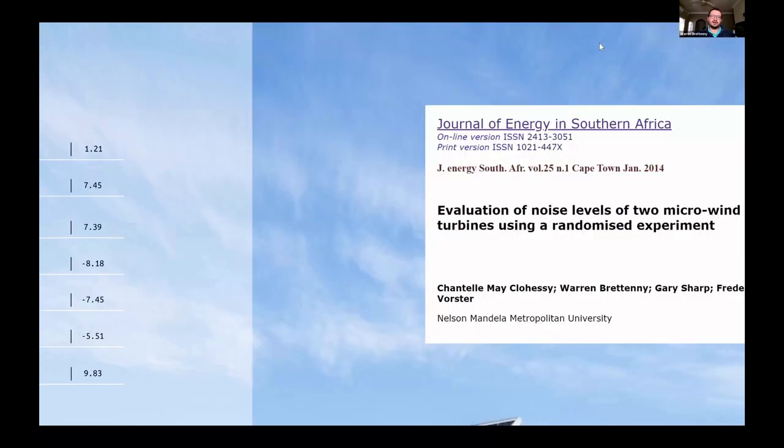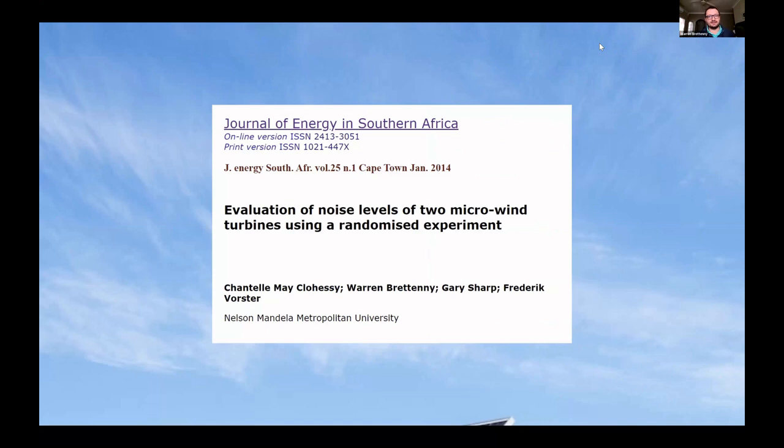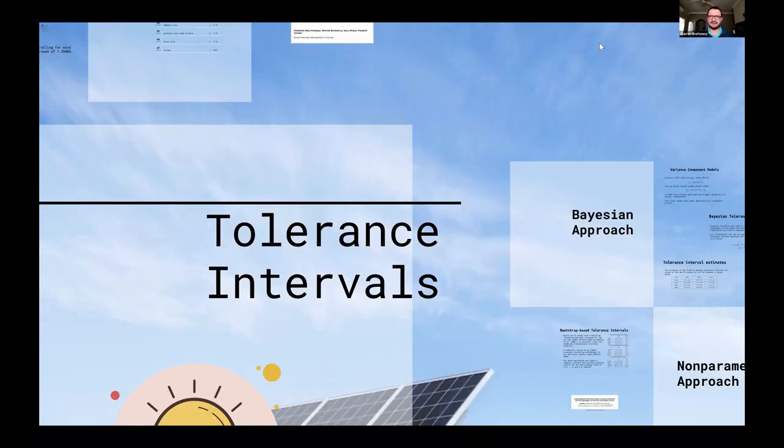The GLM model estimates showed wind speed added one decibel per one meter per second increase. You can see how each of the other factors affected the baseline residential sound. Most notably, the ambient site was truly ambient because it was the quietest. The vertical axis wind turbine was situated close to the ambient site showing a small increase. In 2014, there was a paper authored by myself, Dr. Clohessy, Professor Sharp, and Freddie Foster. That kind of started and ended our investigations into wind energy.